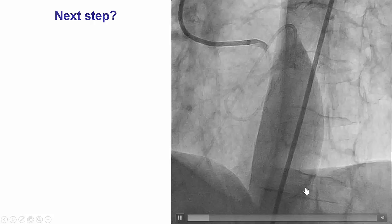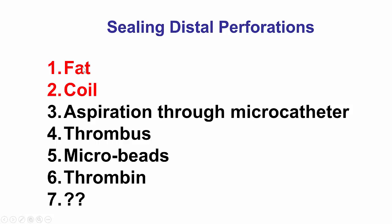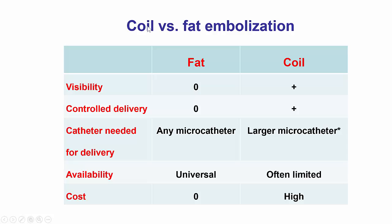What is the next step to treat this ongoing extravasation? Going through the algorithm, the first step is to put a balloon, though in this case the rate of bleeding was very low. The most common way for sealing a distal perforation is by either fat embolization or coil embolization. Other potential treatments include aspirating through a microcatheter to create suction and seal the perforation, creating thrombus on the table and injecting it, creating microparticles, giving thrombin locally, using gel foam, or putting pieces of a guidewire through the microcatheter. But by far the most common methods are fat or coil.